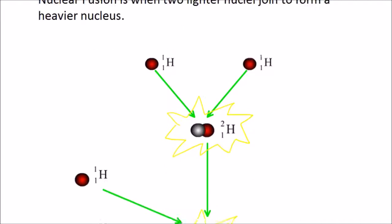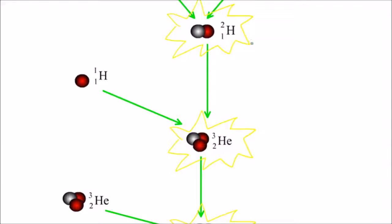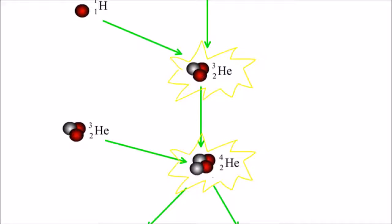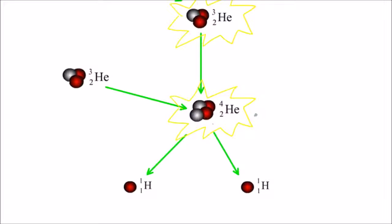And then what can happen is that heavy hydrogen can then fuse with another hydrogen nucleus, forming an isotope of helium, helium-3. And that also releases lots of energy. And then that helium nucleus can then fuse with another helium nucleus and produce helium-4, which is the usual type of helium that we're used to seeing. And in the process, of course, releasing lots of energy again and also emitting these two protons or hydrogen nuclei.